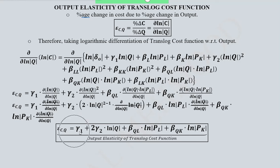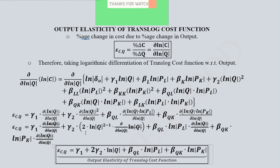Now, this is the final result, and this gives us the output elasticity of the translog cost function. That shows how the output will affect the cost, that is the translog cost function, in percentage terms.